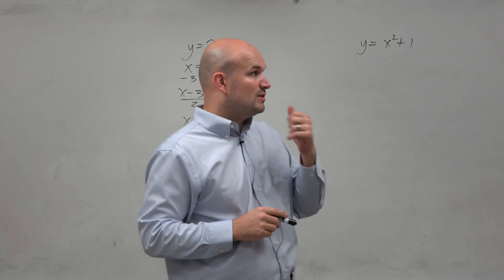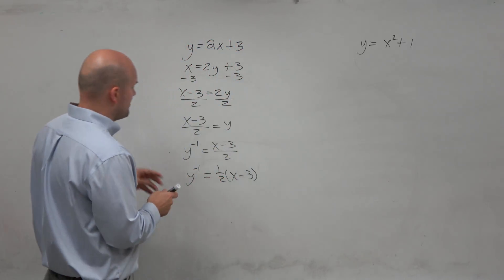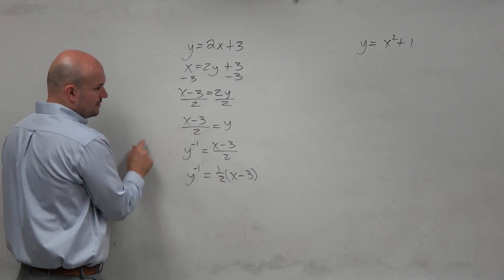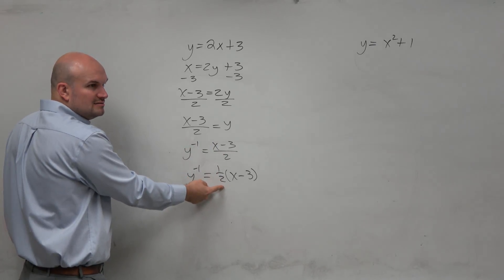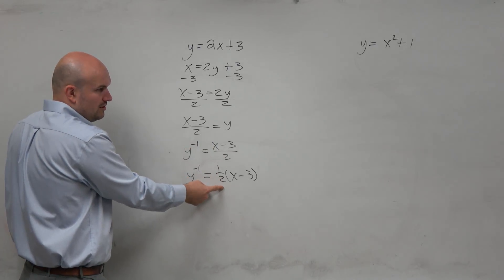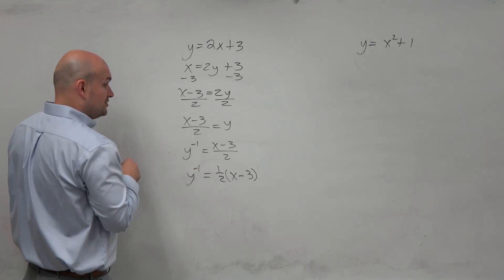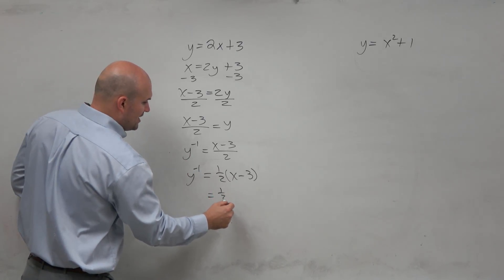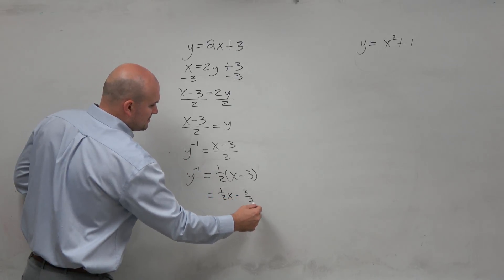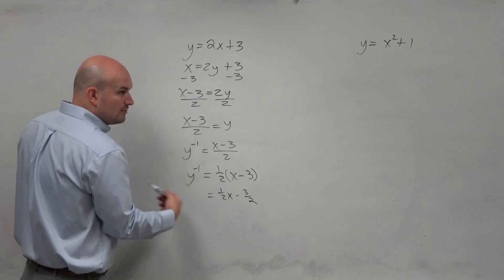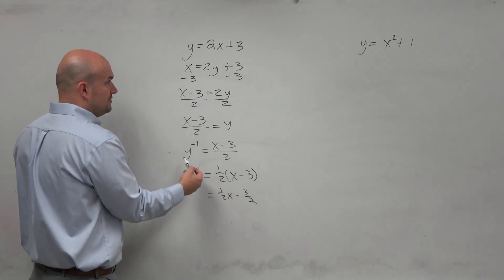Now, what if I asked you to find the domain and range? Well, this is just a line, right? You could distribute this to get 1/2 x minus 3/2. It's a line. Domain is all real numbers. What is the range? All real numbers. So this is kind of obvious, because you should already know the domain and range.